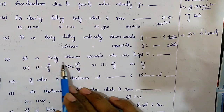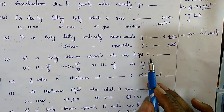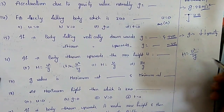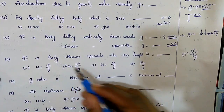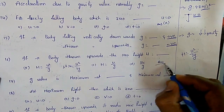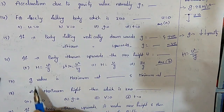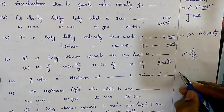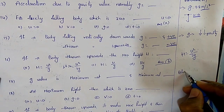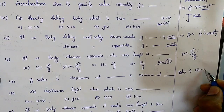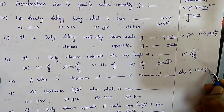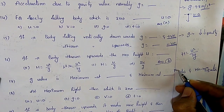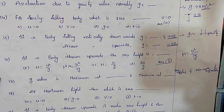If a body is thrown upwards, the maximum height H equals u squared divided by 2g — the answer is option B. The value of g is maximum at the poles and minimum at the equator.